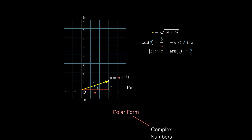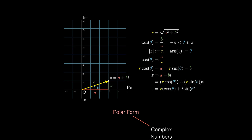From this perspective, cos(θ) = a/r, giving r·cos(θ) = a, and similarly r·sin(θ) = b. Substituting these expressions into a + bi and factoring r gives the polar form of a complex number: r(cos(θ) + i·sin(θ)).